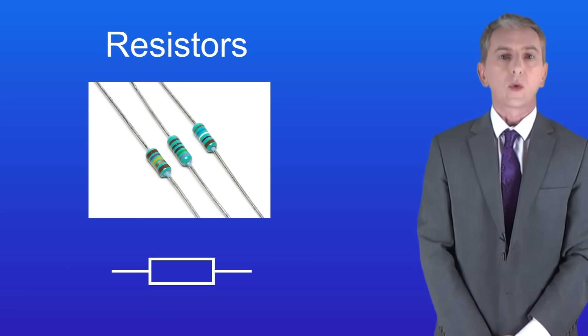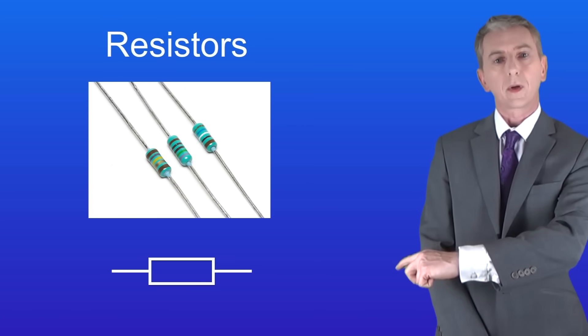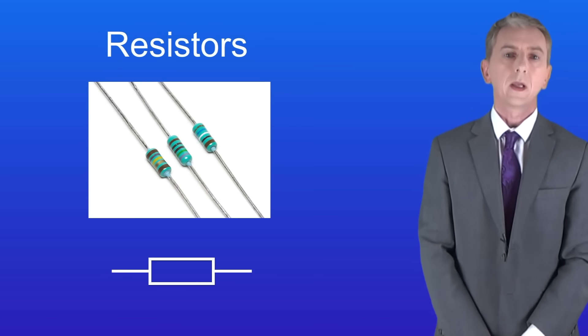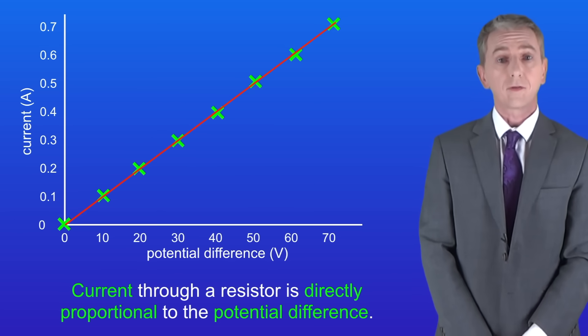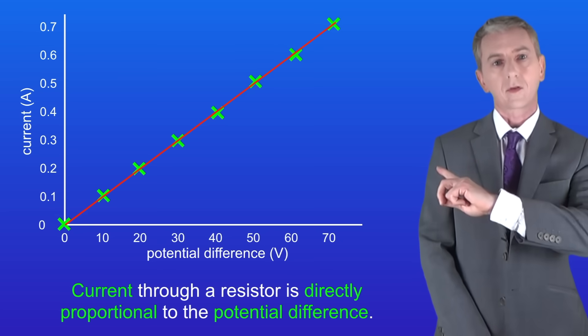In the last video we saw that we can use resistors to control the potential difference in circuits. Here's a symbol for a resistor. If we change the potential difference across a resistor and we measure the current, then we get a straight line passing through zero like this.